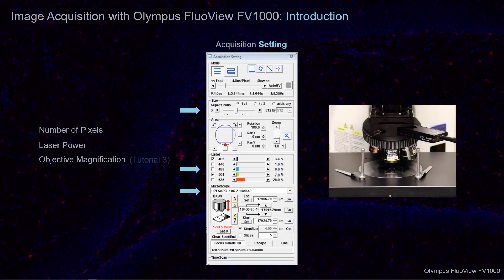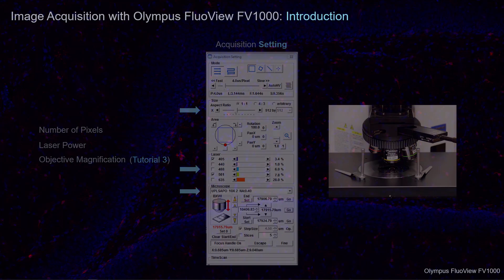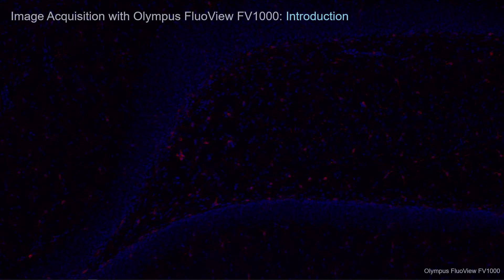Refer to tutorial 3 for information on how to set up the microscope acquisition setting. Stay tuned for tutorial 1: Region of Interest Observation Conditions.